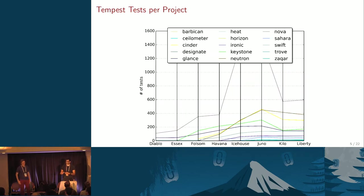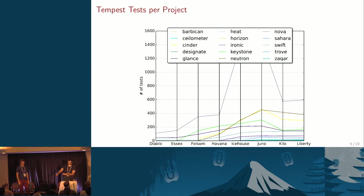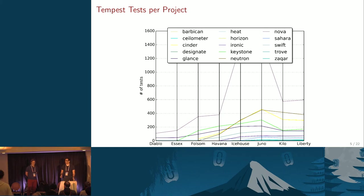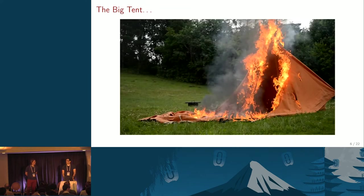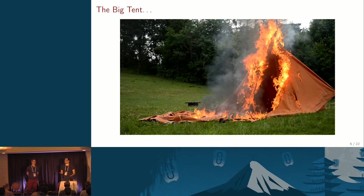Another way to illustrate this is looking at Tempest tests over time. This graph shows there are some projects that have a lot of tests, and then at the bottom there are a ton that have almost nothing. That's a good way to illustrate how we failed to scale after a certain point of doing everything by ourselves in one repo. Eagle-eyed people will notice that Grizzly is missing — that's because it was impossible to run. And then the next thing that happened was the big tent, and our previous scope completely went out the window. The amount of projects that came in grew very rapidly — about a dozen in one cycle — and we couldn't scale at what we had before.